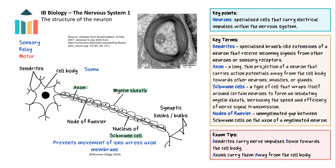Not all neurons are myelinated. There are also non-myelinated neurons. In humans, unmyelinated neurons are found in the central nervous system. At regular intervals along this axon are nodes of Ranvier. These are small gaps between the Schwann cells, where ion channels are concentrated. We will return to these later. Finally, at the end of the axon, we have the synaptic knobs, bulbs or axon terminals. This is where neurotransmitters are released, enabling the signal to be transferred to the next cell.